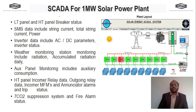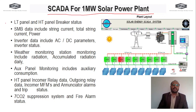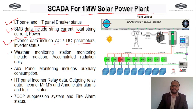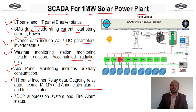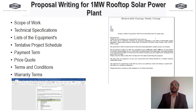We also cover the SCADA system for a one megawatt solar power plant — its major functionalities and parameters to be monitored. These include LT and HT panel breaker status, solar monitoring box data such as string current and total string current, inverter AC and DC parameters, inverter status, weather monitoring station data including radiation and accumulated daily radiation, auxiliary panel monitoring, auxiliary consumption, ST panel incomer and outgoing relay data, incomer MFMs, annunciator alarms, trip status, CO2 suppression, and fire alarm status.